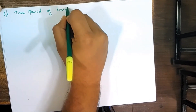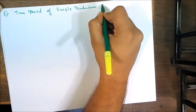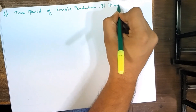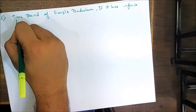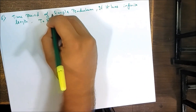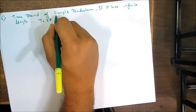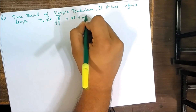Another important formula: the time period of a simple pendulum with infinite length. When the length is infinite (not finite), the time period T = 2π√(R/g), which works out to approximately 6.4 minutes.